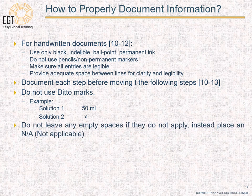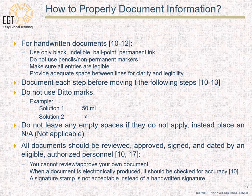It is important to remember that you cannot review and approve your own documents — somebody else needs to do it. When a document is electronically produced, it should be checked for accuracy and an electronic signature needs to be applied. A signature stamp is not acceptable in a GDP environment instead of a handwritten signature.